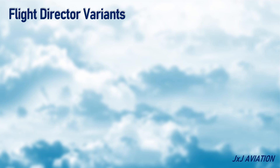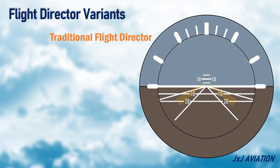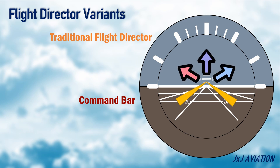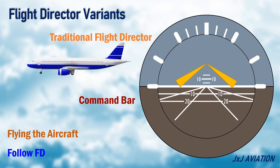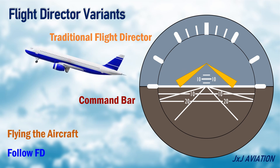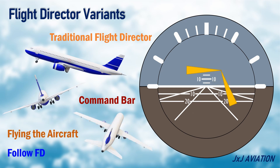A traditional flight director has V-shaped bars, also called a command bar. The bars are triangular in shape and the command bars can move in different directions. The pilot uses the movement information for flying an aircraft. The pilot would follow the direction in which the flight director is moving. So this would mean a pitch up, this would mean bank left, and this would mean a pitch up and right bank.